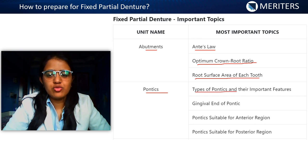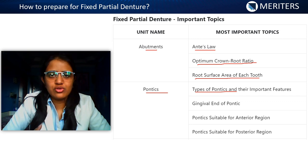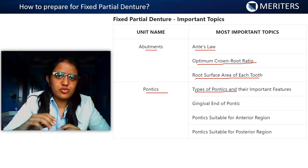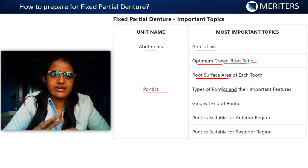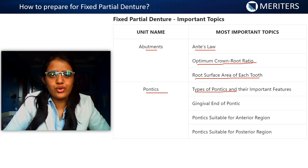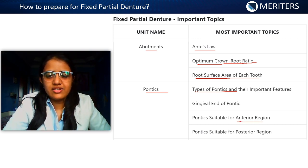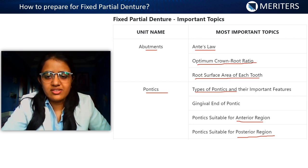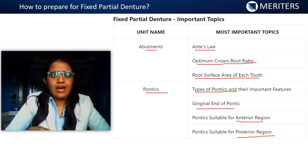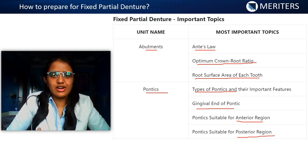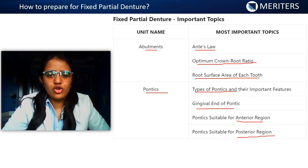For pontics, the classification is based on whether it is mucosal-contacting or non-mucosal-contacting. Non-mucosal-contacting includes sanitary and modified sanitary pontics — know the exact measurement of distance above the gingiva. For mucosal-contacting, know the modified ridge lap and all indications, contraindications, advantages, and disadvantages of all pontic types. Know which pontics are used in anterior versus posterior regions, the gingival contact of each pontic (e.g., modified ridge lap has T-shaped contact), and the ideal requirements for a pontic.